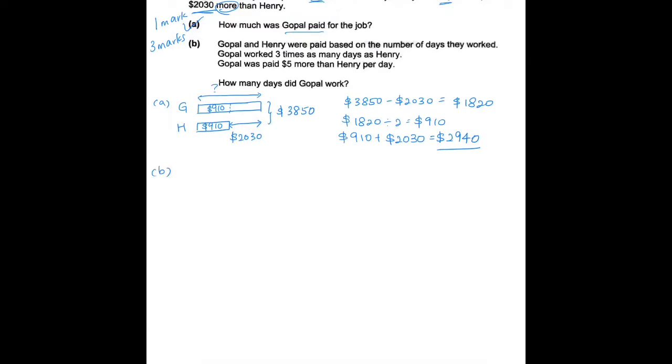The question says that both Gopal and Henry were paid based on the number of days they worked. Gopal worked 3 times as many days as Henry, and Gopal was also paid $5 more than Henry per day. So how many days did Gopal work? This question is slightly more difficult than the first part, but don't worry, we'll figure it out together. Let's start off by drawing our model again. Gopal worked 3 times as many days as Henry.